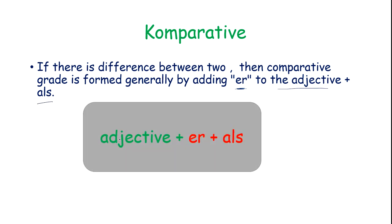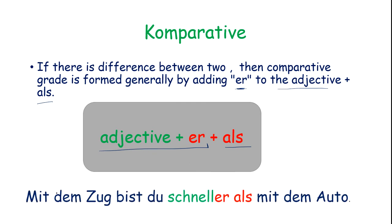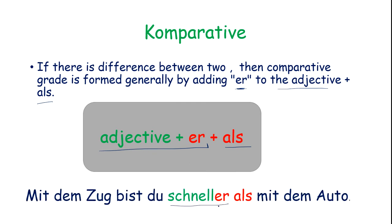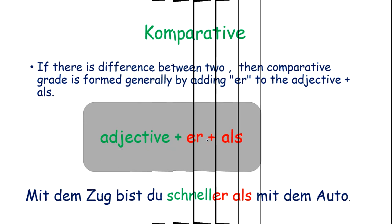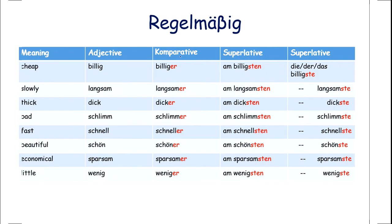Let's see. Adjective plus -er plus als. Mit dem Zug bist du schneller als mit dem Auto. This is a Comparative. There are three forms in Comparative: Regelmäßig (regular), Mit Umlaut, or Unregelmäßig (irregular).